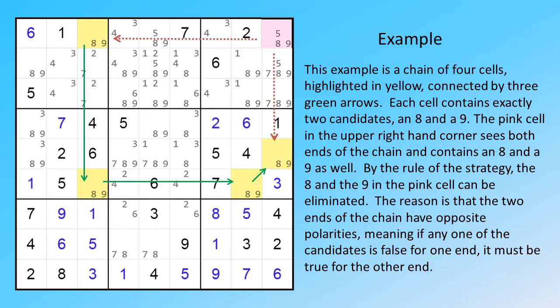By the rule of the strategy, the eight and the nine in the pink cell can be eliminated. The reason is that the two ends of the chain have opposite polarities, meaning if any one of the candidates is false for one end, it must be true for the other end.